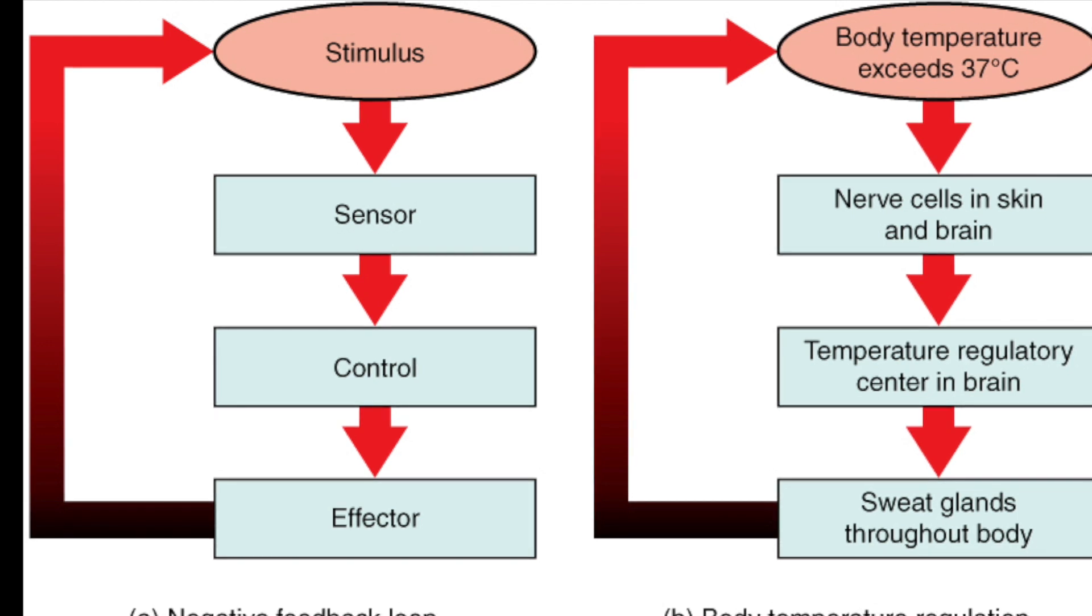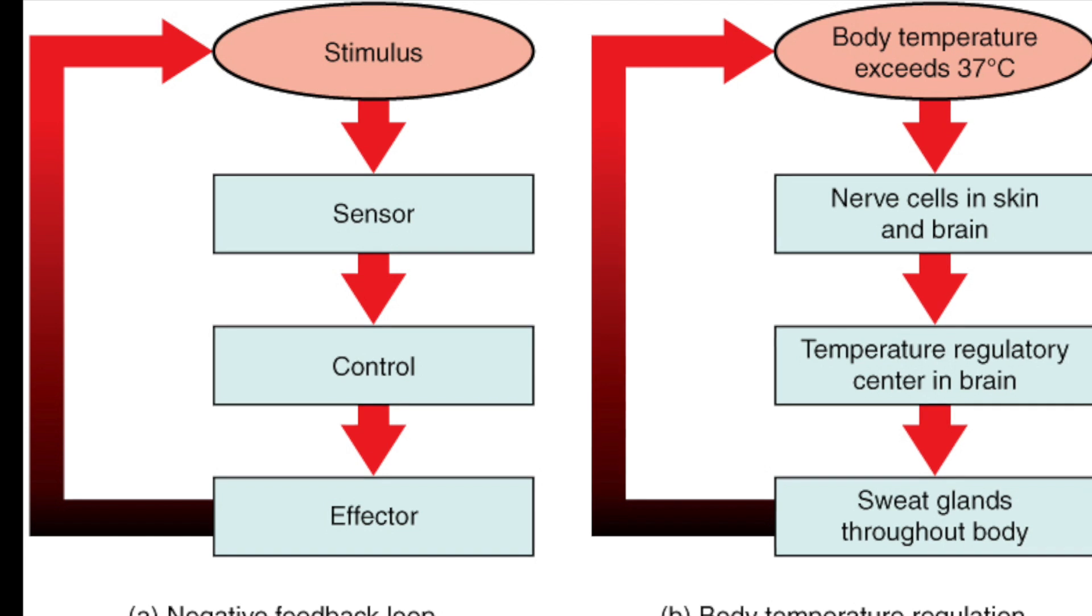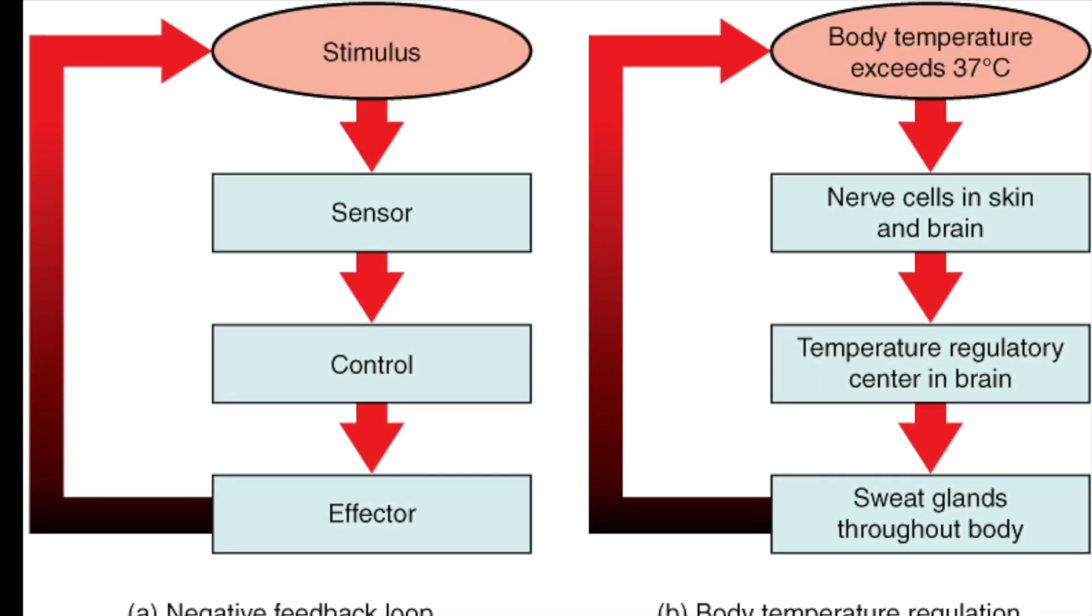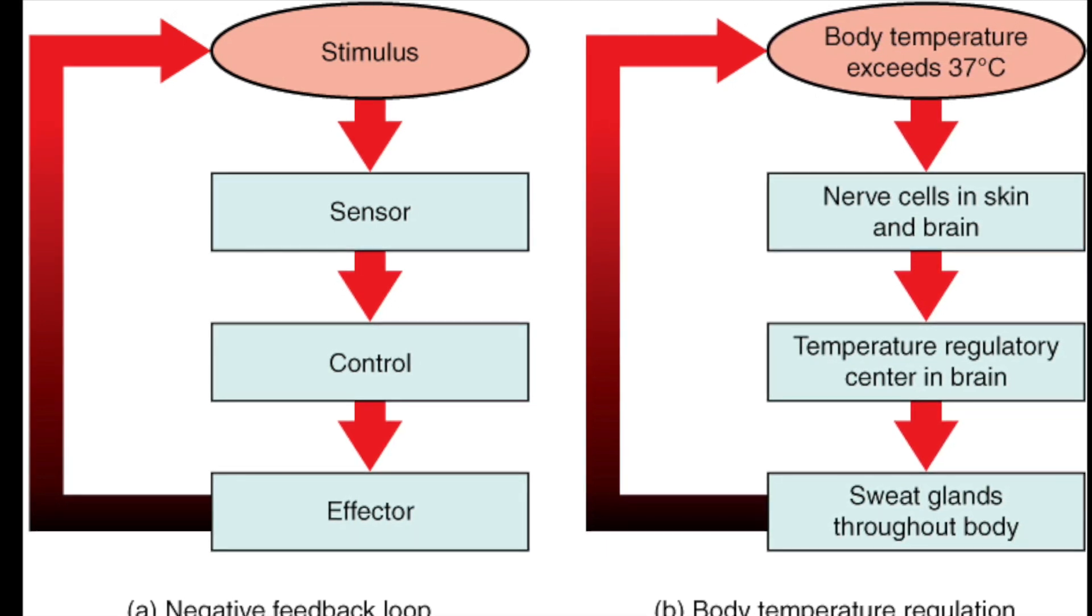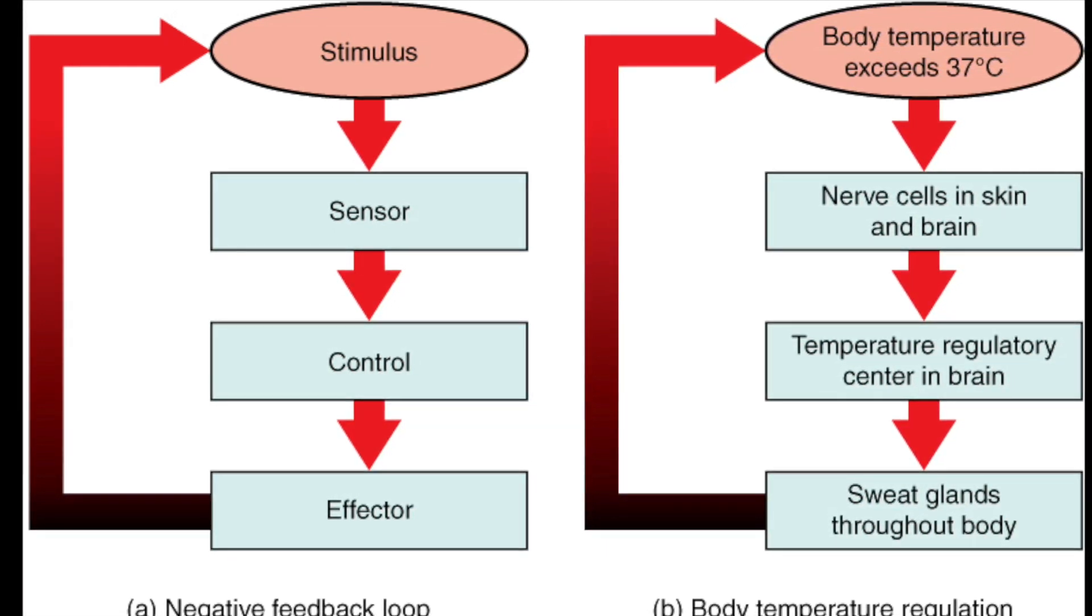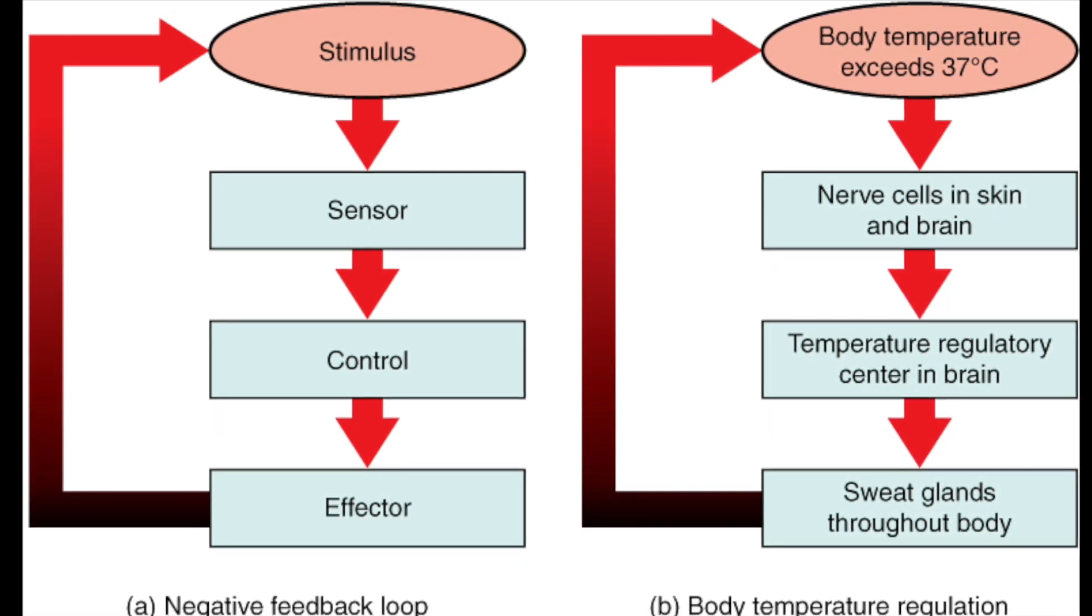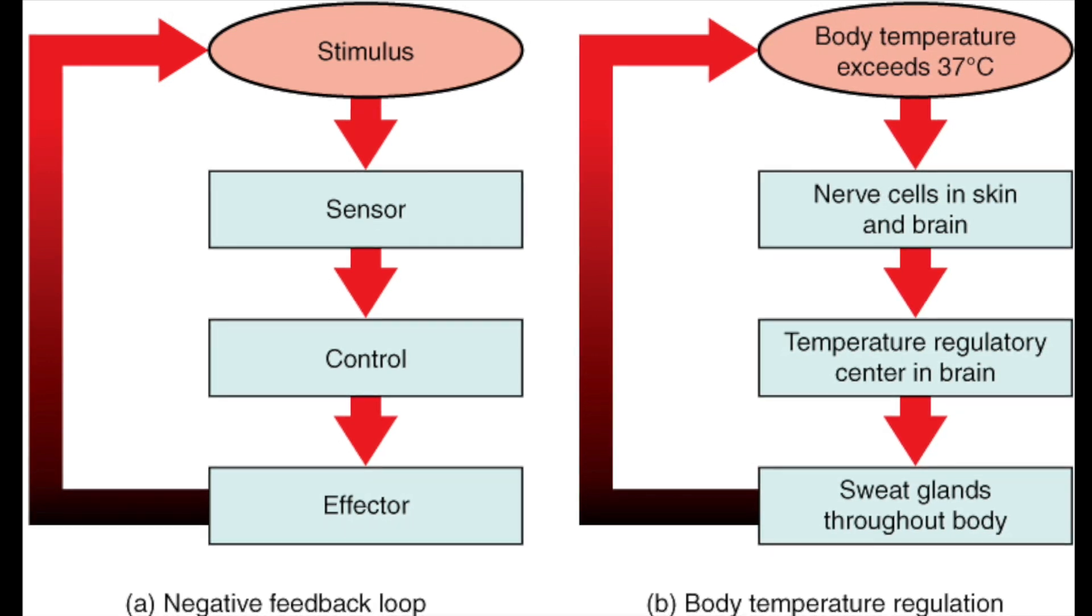Next there are coordination centers. These are areas that receive and process information from receptors. They send out signals and coordinate the response of the body. Finally, there are effectors. These are muscles or glands that bring about responses to the stimulus received, so that everything can be kept constant.